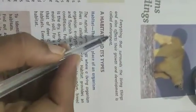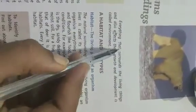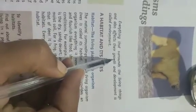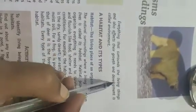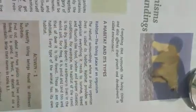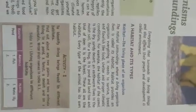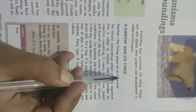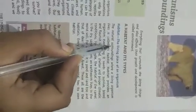Environment ka matlab hota hai — everything that surrounds the living things and also affects their growth and development. Usse hum environment bholenge. Next is habitat and its types. Habitat ka matlab hota hai rehne ki jaga — the living place of an organism, its natural surrounding. Jahan par koi living organism rahe, usse hum habitat bolte hain.